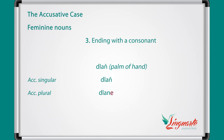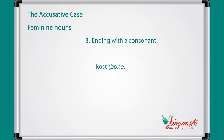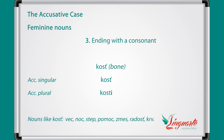The nouns ending in a consonant like dlaň have this accusative: dlaň in singular and dlaňe in plural. Nouns like dlaň are pieseň, loď, báseň, reportáž, poschodie. Nouns ending in a consonant like kosť have this accusative: kosť in singular and kosti in plural. Other nouns like kosť are vec, noc, step, pomoc, zmes, radosť.